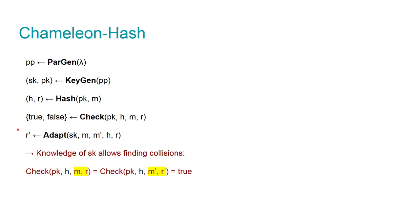And it outputs some new randomness R'. This algorithm essentially allows finding collisions. If we hash honestly, we have H, R, PK, and M, and of course the check algorithm should output true.